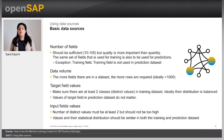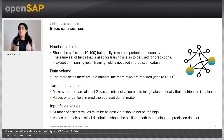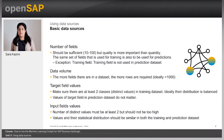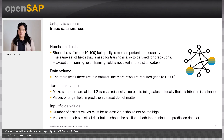Regarding data volume: the more fields there are in the dataset, the more rows are required, because each value of a field needs a certain number of samples from which the model algorithm can train. Regarding the target field values, make sure there are at least two classes in the training dataset. Ideally, their distribution is balanced, meaning the size of the classes is comparable. Values of the target field in the prediction dataset do not matter, because the target field is not used during the prediction process.